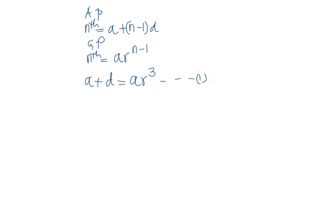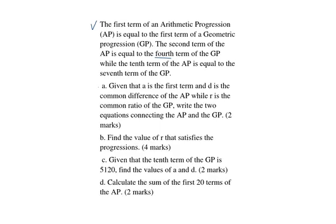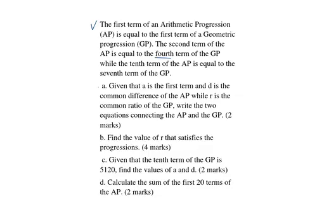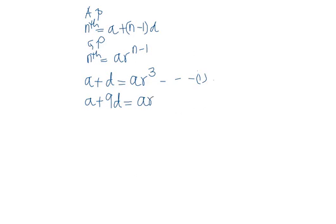Equation number 2 comes from the next statement, where we are told that the tenth term of the AP is equal to the seventh term of the GP. So the tenth term of the AP is A plus (10 minus 1), which is 9, multiplied by the common difference D, equal to A multiplied by the common ratio R to the power 7 minus 1, which is 6. Call this equation number 2, and we've answered part A.